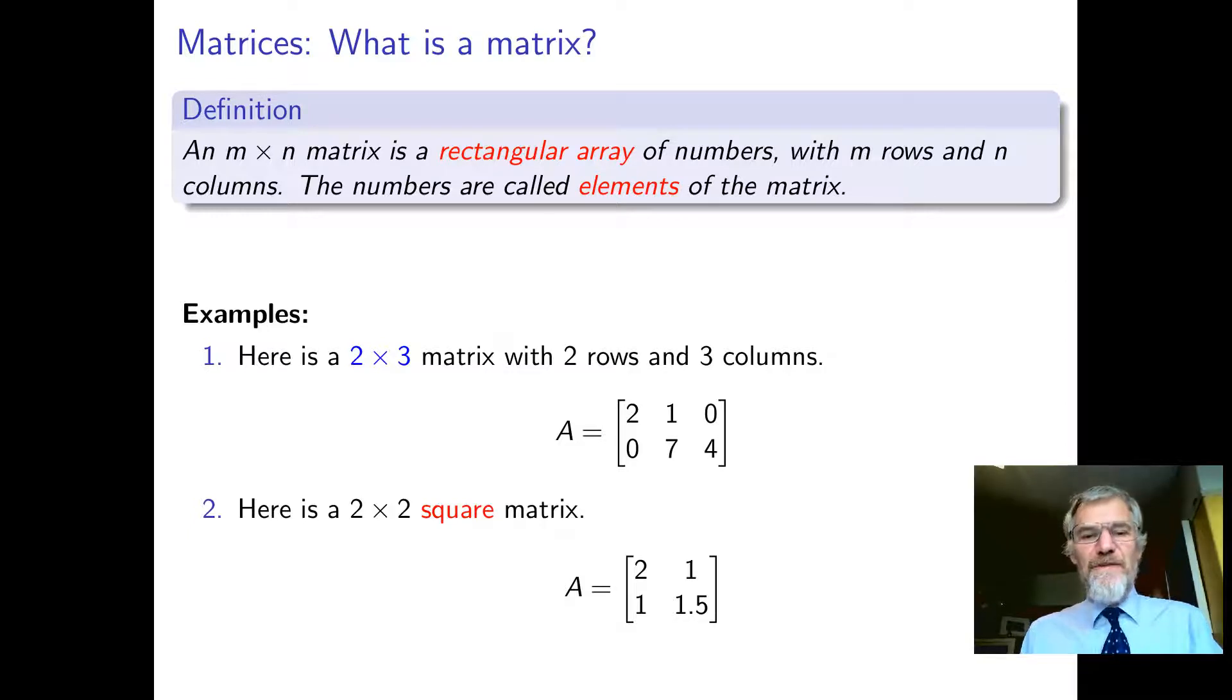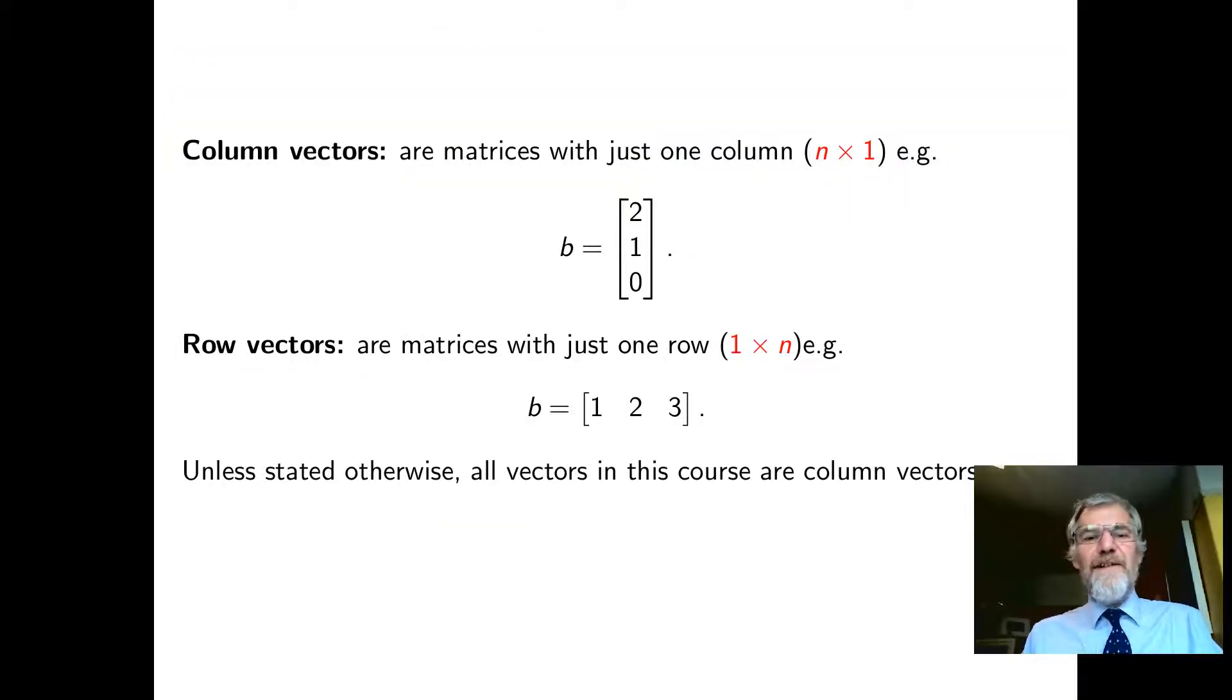Here's a two by three matrix. It's got two rows and three columns. And here's a two by two square matrix. It's got two rows and two columns. Column vectors are just matrices with one column, so they're n rows by one column.